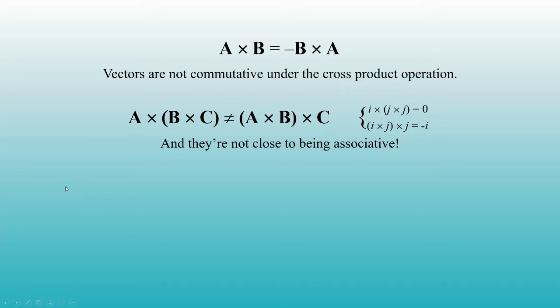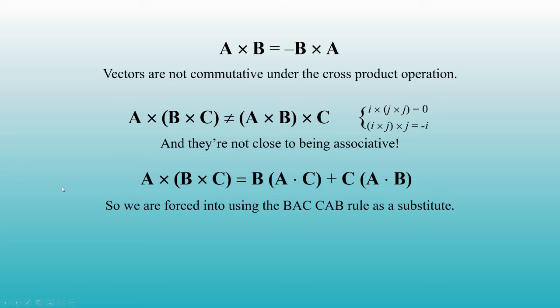What do textbooks have to say about this? They have the famous back-cab rule, which is one of the vector identities that's out there. So the cross product is not associative — move along, folks, nothing to see here, just use this expression instead. But you're sort of left with this sense that we use the back-cab rule because we can't use the associative property. What's wrong with this picture?